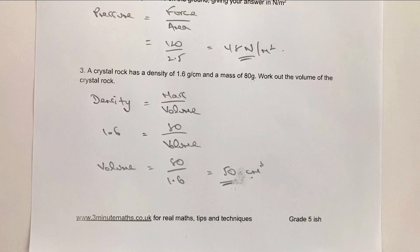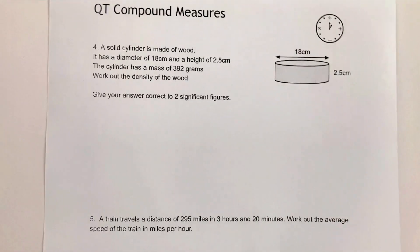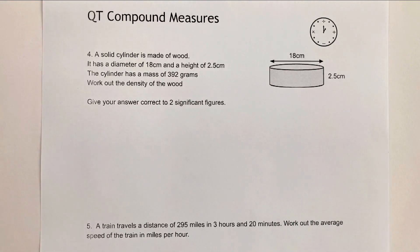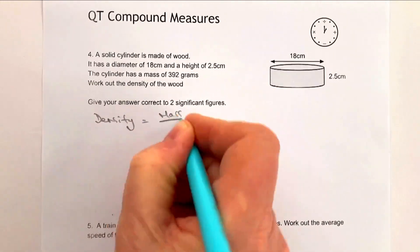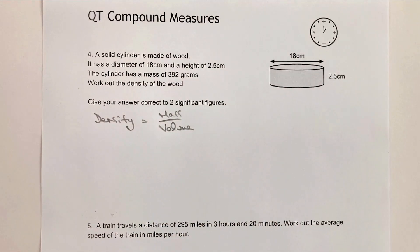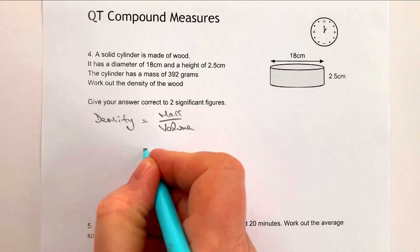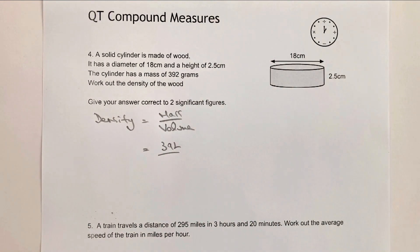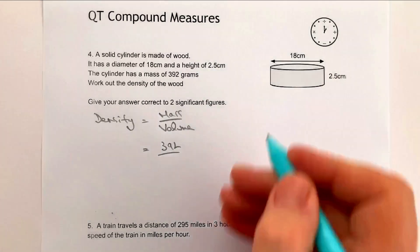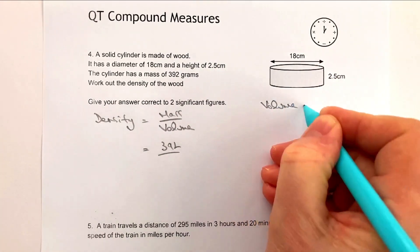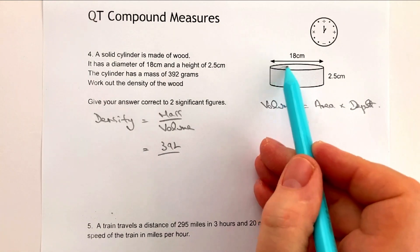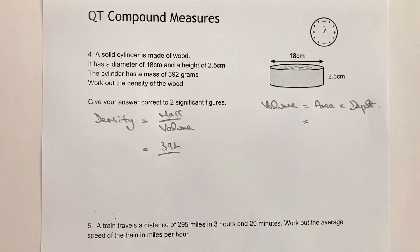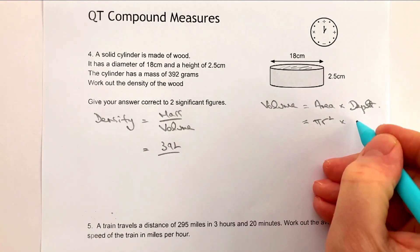Question four again uses the density formula: density equals mass divided by volume. The mass is 392 — that's fine. We need to work out the volume. The volume of a cylinder equals area times depth, and the difficulty here is we have a circle at the top, so this is a cylinder, meaning the area is pi r squared multiplied by the depth of 2.5.